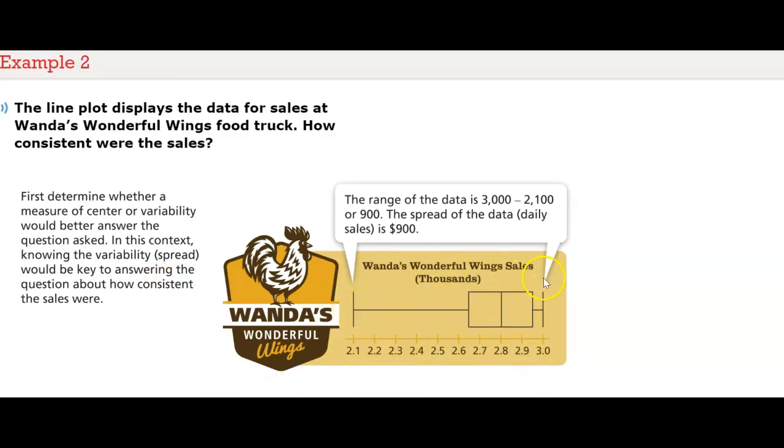Here to here, that's your lowest amount of data. This is your greatest amount of data. So, the range of the sales at Wanda's Wonderful Wings would be $2,100. That's what the 2.1 represents. And here at 3.0, which represents $3,000. So, we take the range. That's $3,000 minus the $2,100. And that gives us $900. The spread of the data from here to here is $900.